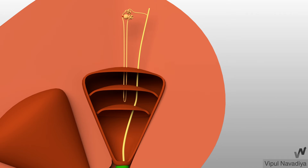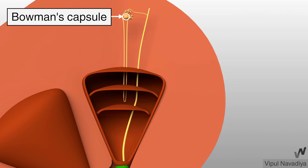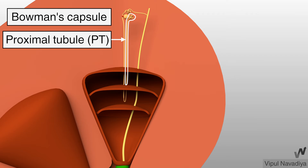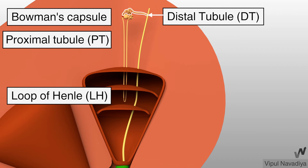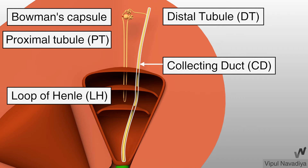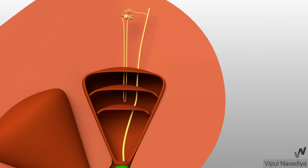Now, parts of the tubule. The tubule is divided into Bowman's capsule, proximal tubule, loop of Henle, distal tubule, and collecting duct. We have already covered Bowman's capsule in the previous video with renal corpuscle, so we will directly go to the proximal tubule.